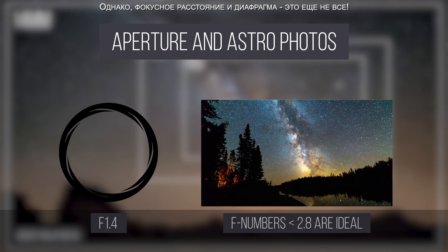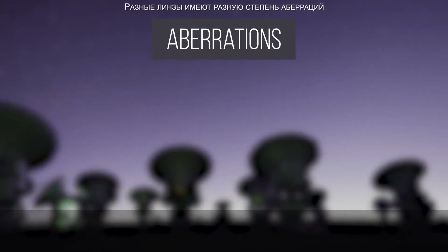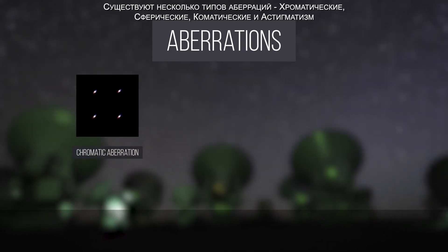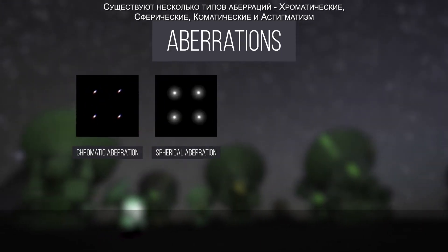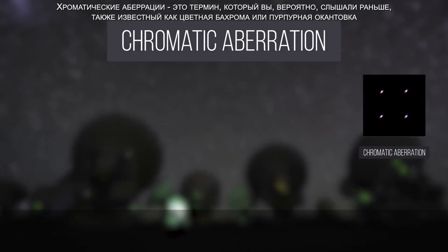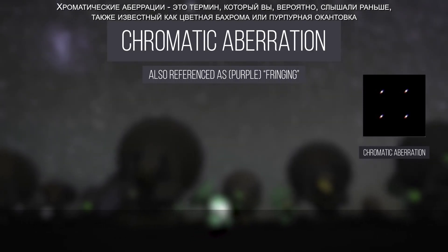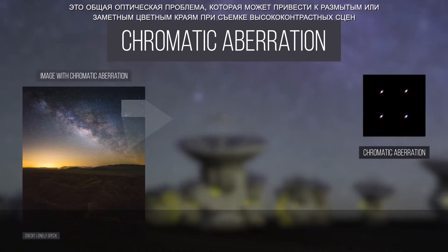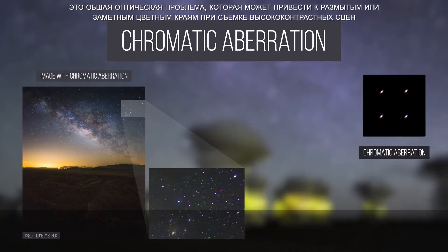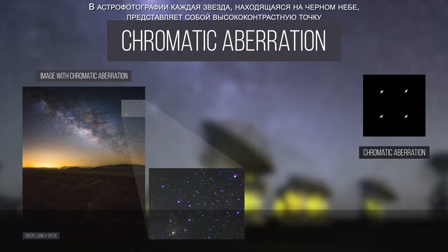Focal length and aperture are not the entire story, however. Different lenses come with different degrees of aberrations. The aberrations that make the biggest impact in astrophotography are chromatic aberrations, spherical aberrations, comatic aberrations, and astigmatisms. Chromatic aberration is a term you've probably heard before — also known as color fringing or purple fringing. It is a common optical problem that can cause blurry or noticeable colored edges in high contrast situations, and in astrophotography, each star plastered against a black sky is a high contrast situation.